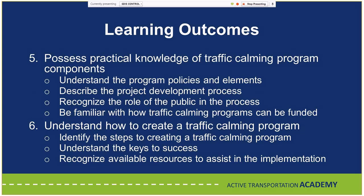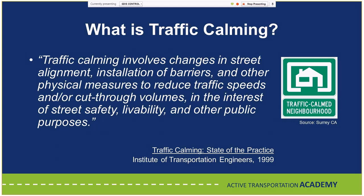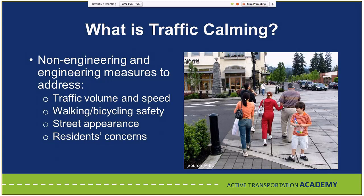Our goal is to take you full circle on traffic calming — start with the basics, and take you all the way through how to set this up step-by-step in your community. Traffic calming, per ITE, involves changes in street alignment, installation of barriers, and other physical measures to reduce traffic speeds and/or cut-through volumes in the interest of street safety, livability, and other public purposes. Beyond just physical measures, traffic calming also includes non-engineering, non-physical measures. The goal is to address traffic volume and speed, walking and bike safety, street appearance, and residents' concerns.